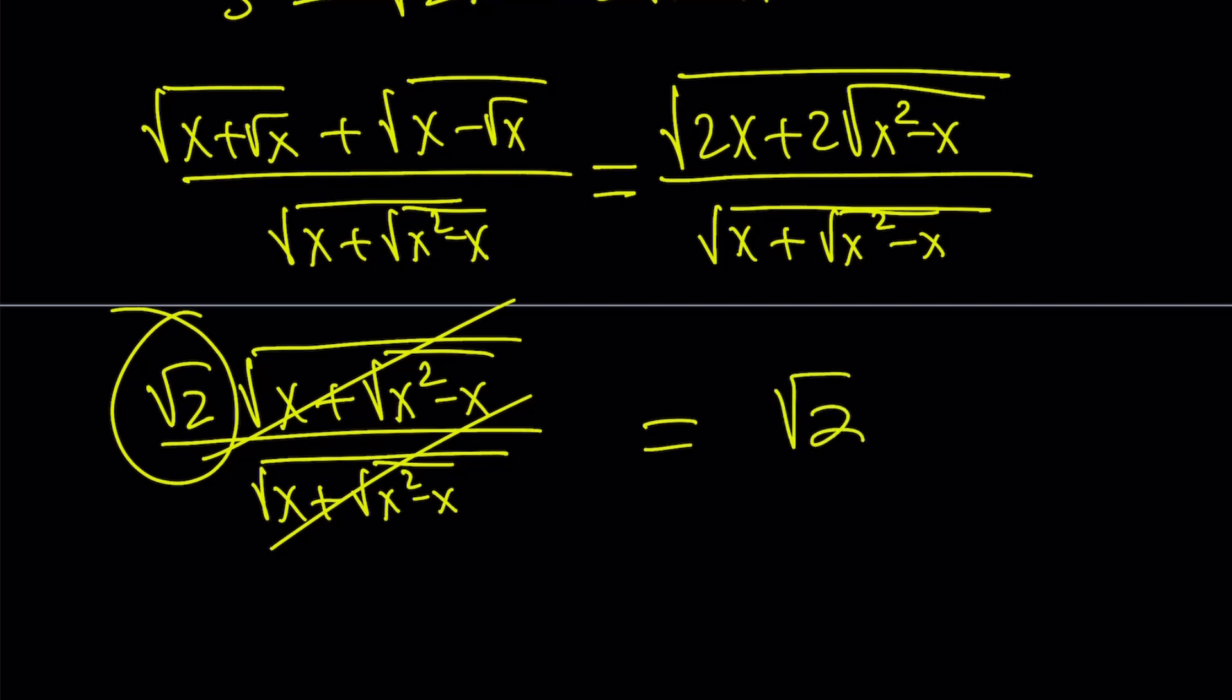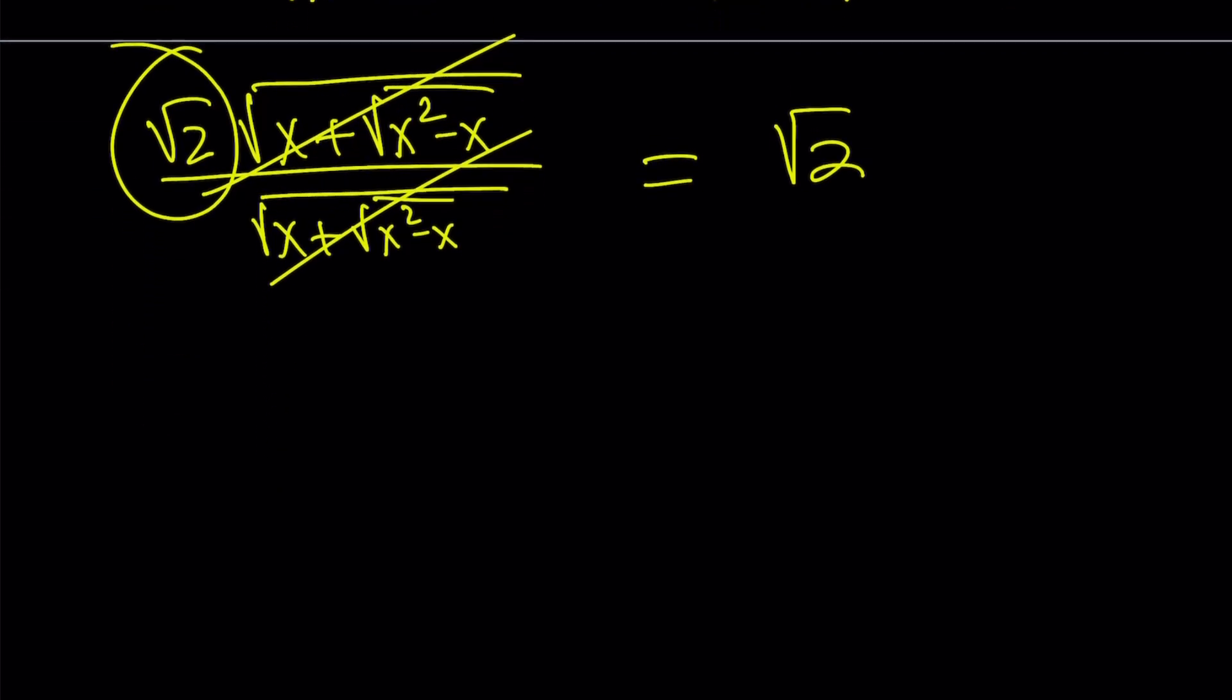That's why our expression was a horizontal line when graphed, because we get a constant function from here, or a constant value. All right, great. Let's go ahead and talk about the second method.